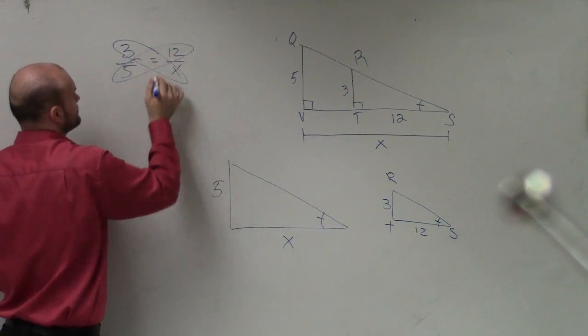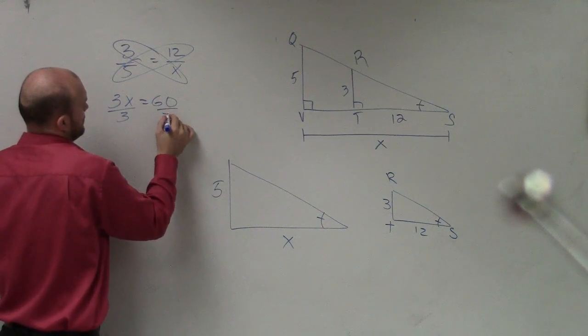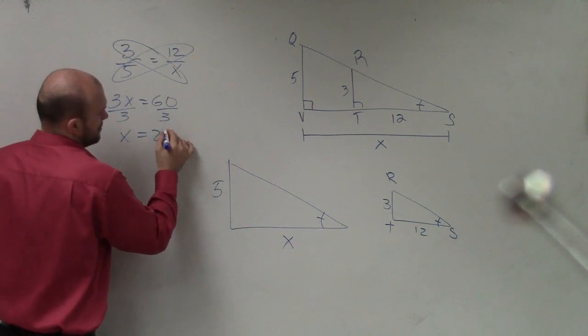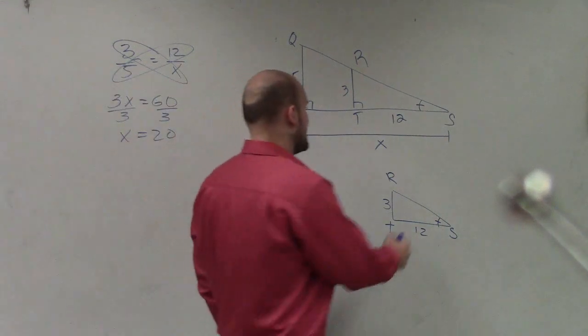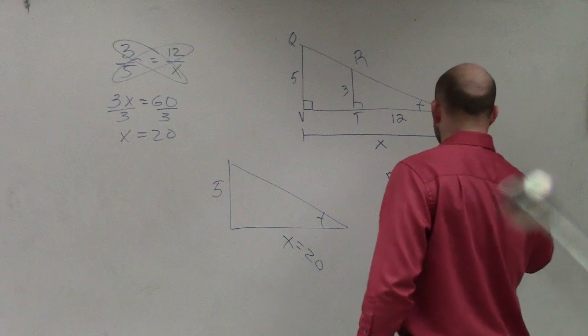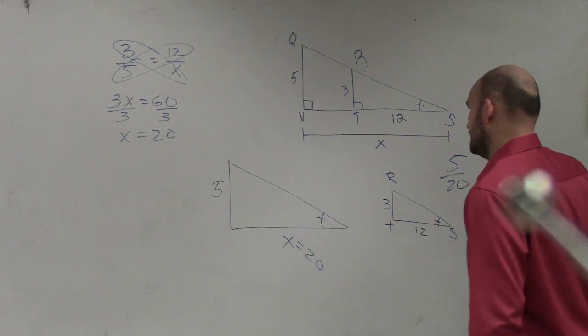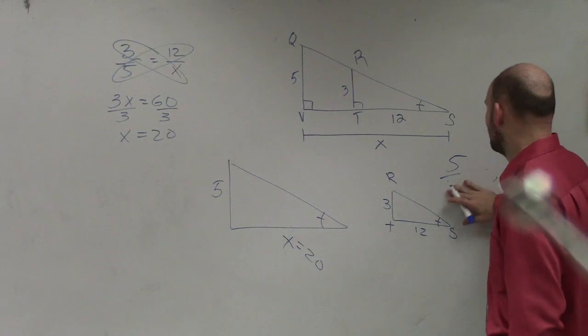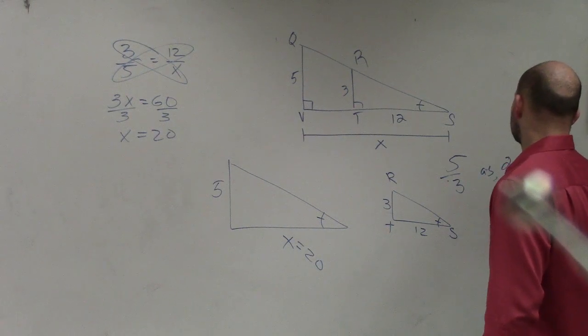When I cross multiply this way, I get x equals 20. So then I'd say is 5 is to 20 as—I'm sorry—is 5 is to 3 as 20 is to 12?